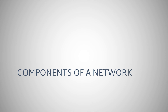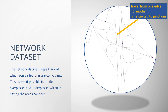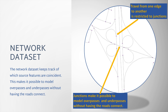In order to run a network analysis, you first need to create or obtain a Network Data Set. A Network Data Set is a type of vector data built from a collection of related source features such as lines and points. It also stores the connectivity between the source features. By themselves, features such as lines and points are unaware of each other — for example, if two line features intersect, neither line is aware of the other. The Network Data Set keeps track of which source features are coincident, and has a connectivity policy which you can modify to further define which coincident features are truly connected. This makes it possible to model overpasses and underpasses without having the roads connect. When a network analysis is performed, the GIS will know which paths along the network are feasible.